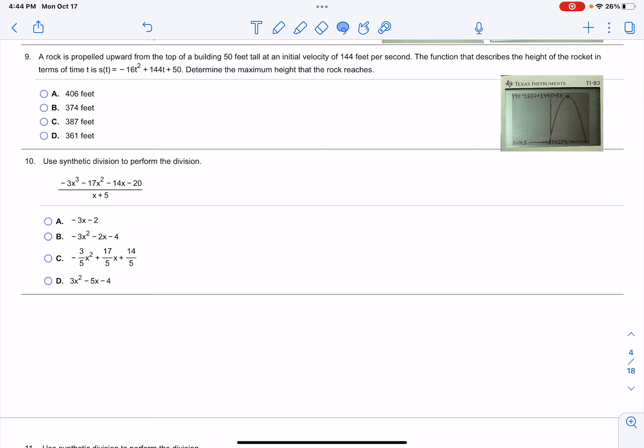The function that describes the height of the rocket in terms of time t is s(t) equals negative 16t squared plus 144t plus 50.